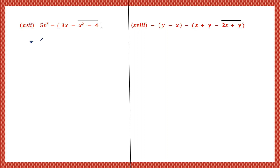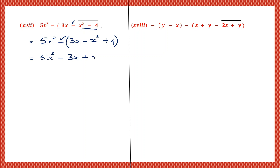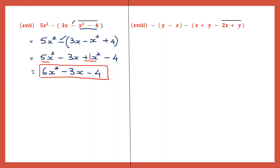Question 17: 5x squared minus. We can't open brackets because we have a bar bracket there. 3x - now under the bar bracket we have x squared minus 4. The sign before it is minus, so the sign of all these terms will change: x squared becomes minus x squared, minus 4 becomes plus 4. And I've opened my bar bracket. So 5x squared - now I can open the common bracket. I have a minus sign before, so the sign of all terms will change: plus 3x becomes minus 3x, minus x squared becomes plus x squared, plus 4 becomes minus 4. Now putting x squared terms together: 5 plus 1 is 6x squared. Minus 3x remains the same, and minus 4 remains the same. So the final answer is 6x squared minus 3x minus 4.